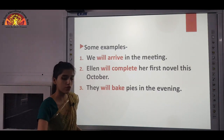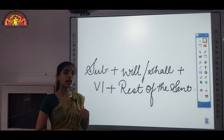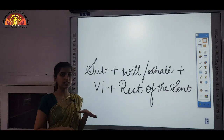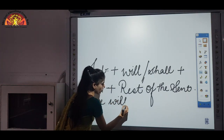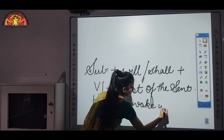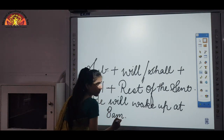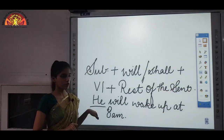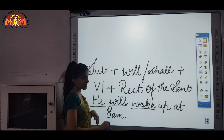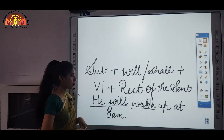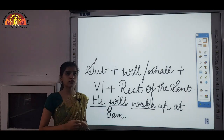The structure for simple future tense is: Subject + will + V1 (base form) + rest of the sentence. For example: 'He will wake up at 8 am.' He is the subject, then 'will,' then 'wake' — the first form of the verb — then the rest of the sentence. You can write this structure in front of the topic in your book.